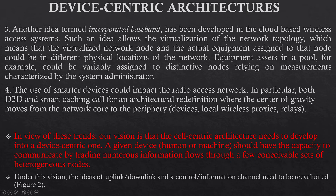The last trend is that the use of smarter devices could impact the radio access network. In particular, both D2D and smart caching call for an architectural redefinition where the center of gravity moves from the network core to the periphery, involving devices, local wireless proxies, relays, etc. In view of these trends, our vision is that the cell-centric architecture needs to develop into a device-centric one. A given device — human or machine — should have the capacity to communicate by routing numerous information flows through a few possible sets of heterogeneous nodes. Under this vision, the idea of uplink, downlink, and control information channels needs to be re-evaluated.